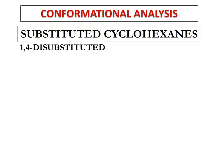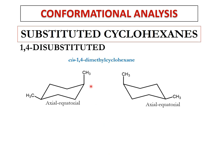For cis-1,4-dimethylcyclohexane, one CH₃ is axial at position one. For the second CH₃ at position four to be cis, it must be equatorially oriented, because at 1,4 positions axial groups are trans to each other. So we have an axial-equatorial orientation for the cis-1,4-dimethylcyclohexane. When the ring flips, the axial CH₃ becomes equatorial and the equatorial CH₃ becomes axial — again an axial-equatorial orientation with similar energies.